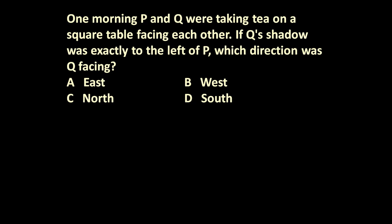Here the given problem is one morning P and Q were taking tea on a square table facing each other. If Q's shadow was exactly to the left of P, which direction was Q facing? East, West, North or South.